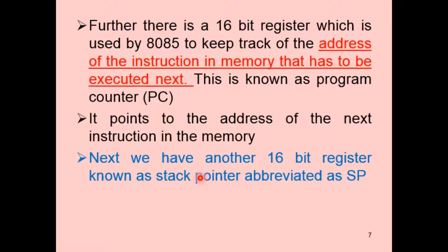There is a 16-bit register used by the 8085 to keep track of the address of the next instruction to be executed, called the Program Counter. Its function is to point to the address of the next instruction in memory, telling the microprocessor which instruction is to be executed next.